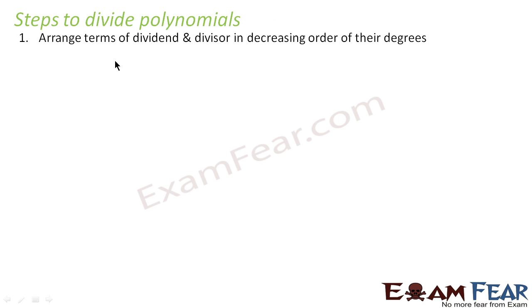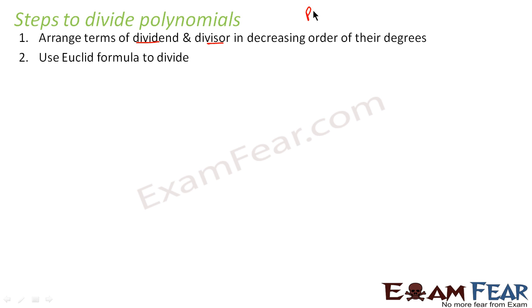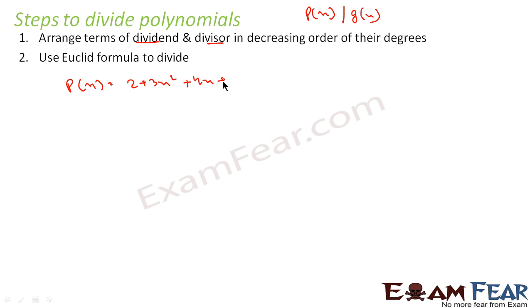To divide polynomials, the first step is to arrange the terms of the dividend and divisor in descending order of their degrees. Once done, we use the Euclid formula. For example, let's divide p(x) by g(x), where p(x) = 2 + 3x² + 4x + x³ and g(x) = 1 + x.